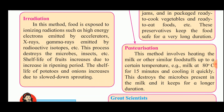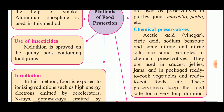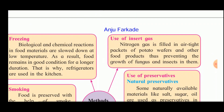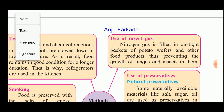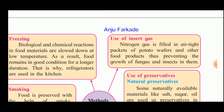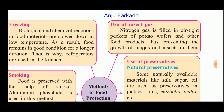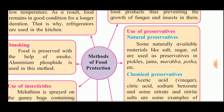Potatoes and onions can be stored for a year in the house due to irradiation. The next method is the use of inert gas. Nitrogen gas is filled in airtight packets of potato wafers and other foodstuffs, thus preventing the growth of fungus and insects in them.